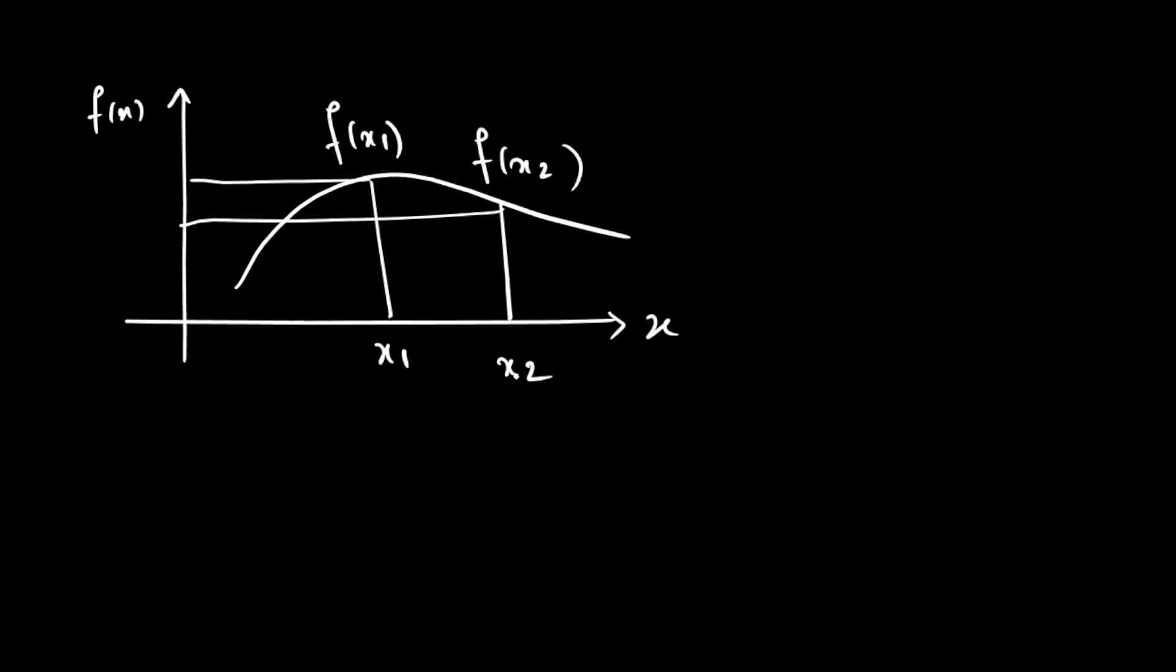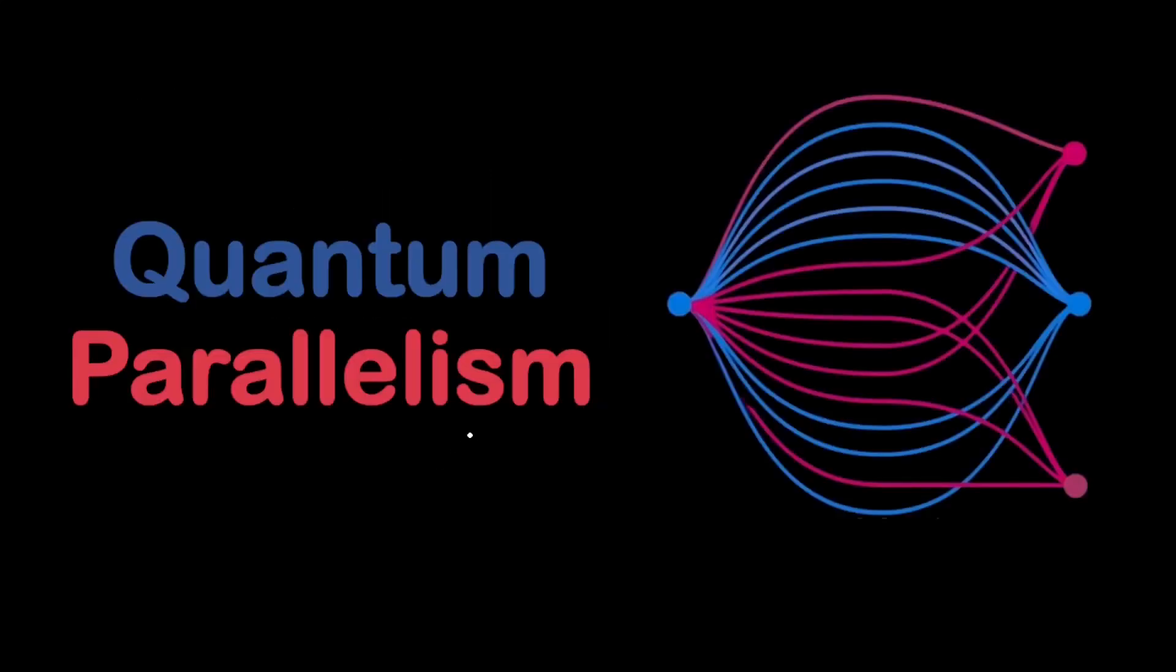But what if we can measure f for different values of x simultaneously? This in a nutshell is quantum parallelism. The concept of quantum parallelism allows quantum computers to evaluate a function f for many different values of x simultaneously.